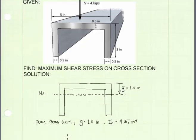Now previously in problem 6.2-1, we found Y-bar and the moment of inertia about the Z-axis for this cross section. They are given here.